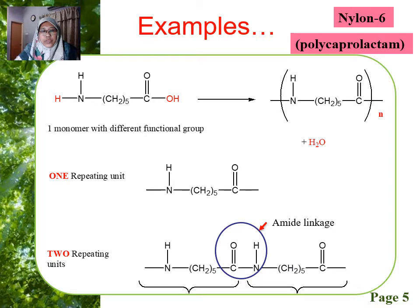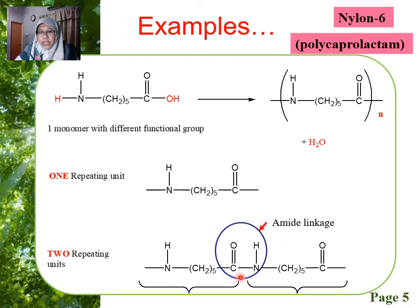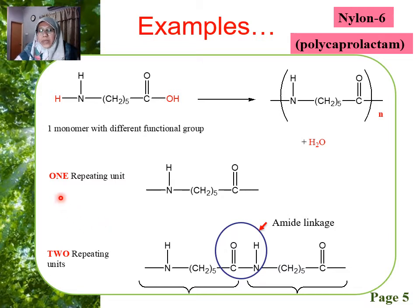In this example, we have one monomer where the right end is a carboxyl group and the left end is an amino group. When we combine two of these, we look at the two repeating units — a bond forms between part of the carboxyl and part of the amino group. This bond is called amide linkage, where C double bond O is attached to the NH part. You need to know not only the reactant, the product, and the byproduct, but also how to write one repeating unit and two repeating units in order to show the amide linkage.